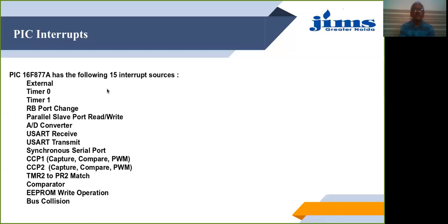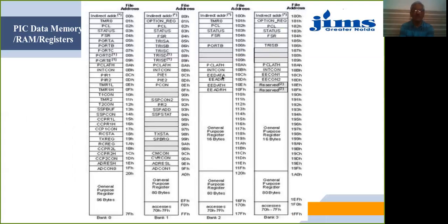Now let's look at the register file again, specifically for the purpose of interrupts. This data memory contains the special function registers — SFRs — and the general purpose registers. Within the SFRs there are core SFRs and peripheral SFRs. For interrupts, the registers of interest are INTCON, PIR1, PIR2, PIE1, and PIE2. INTCON is available in all four banks of the register file.